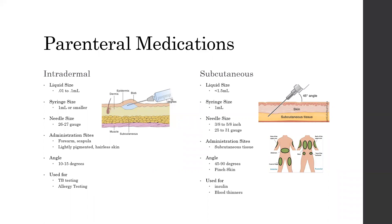Subcutaneous injections go into the subcutaneous tissue. The volume injected must be less than 1.5 mL, typically using a 1 mL syringe. The needle size is 3/8 to 5/8 of an inch long with a gauge of 25 to 31. Administration sites are anywhere subcutaneous tissue is present: the abdomen, thighs, back of the arms, lower back, and anywhere with fatty tissue. The angle is 45 to 90 degrees — 45 degrees for thinner patients and 90 degrees for those with more prominent subcutaneous tissue. Pinch the skin when administering. Common examples include insulin and blood thinners like heparin or Lovenox.